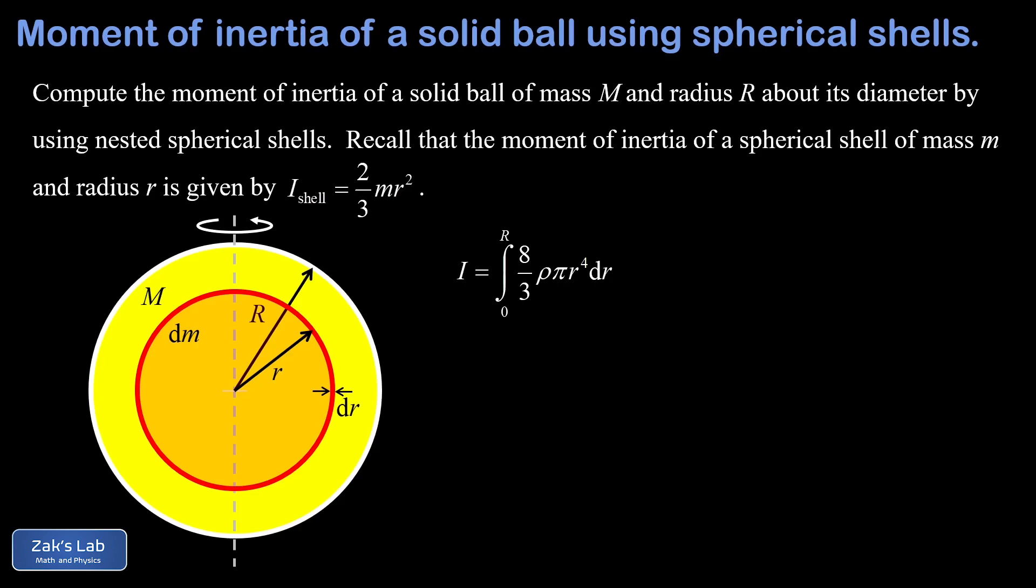So in this integral, little r is the integration variable and everything else is constants. So we can highlight that fact by writing the constants out in front. So this leaves us with an integral from zero to big R of r to the fourth dr. Well, that's just a basic power rule integral that's going to integrate to one fifth r to the fifth.